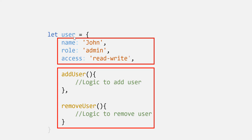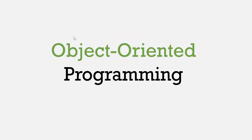We use objects to pack all the data and behavior of a real-world entity all in one big block. Objects are self-contained pieces or blocks of code, and we use them as the building blocks of our application and make them interact with one another. The object-oriented paradigm was developed with the goal of organizing code to make it more flexible and easier to maintain.